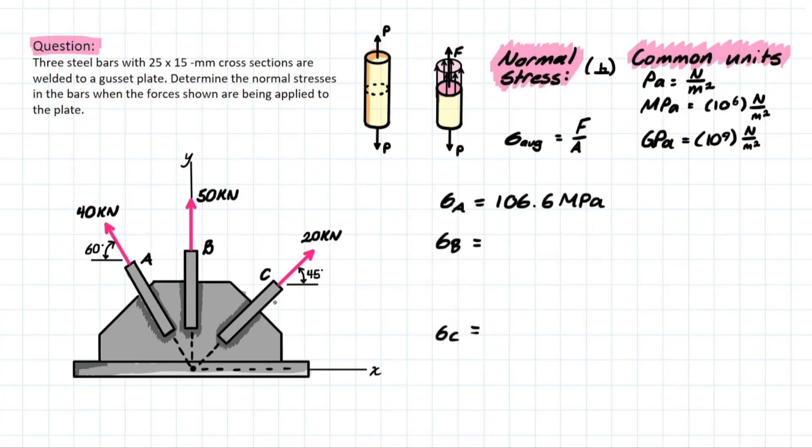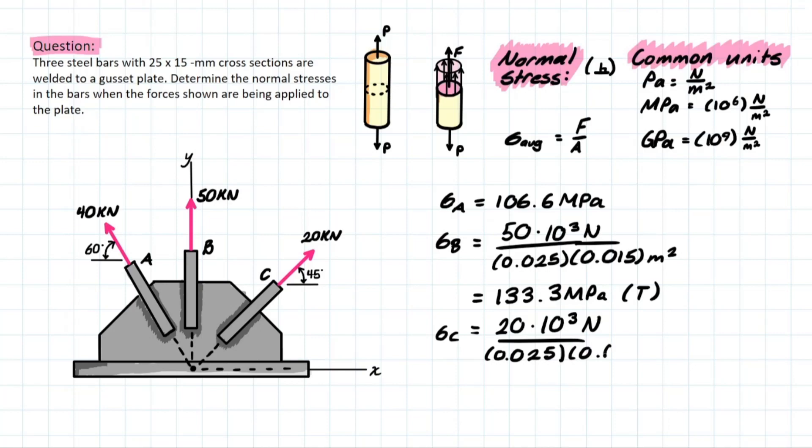Now, similarly, we can do the same for members B and members C. And we're just following the same rules that we did before, where we're going to have 50 on top for this member B, multiply by 10 to the 3 to get that into newtons. Then on the bottom, it's going to be that same cross-sectional area that we had before, which is 0.025 times 0.015 for meters squared. Calculating B, we are going to be left with a stress of 133.3 mega pascals also in tension. And then we have a similar thing for member C, except instead of 50 this time, it's going to be 20. And we have the same area on the bottom. And this will leave us with a final answer of 53.3 mega pascals for C.